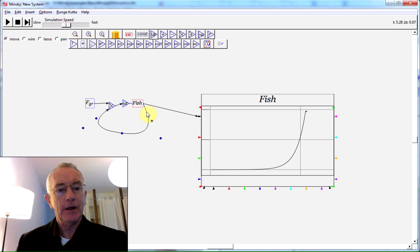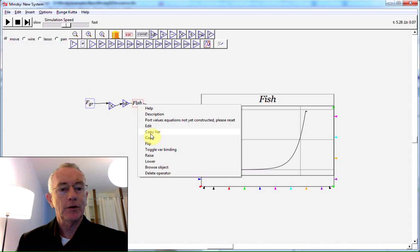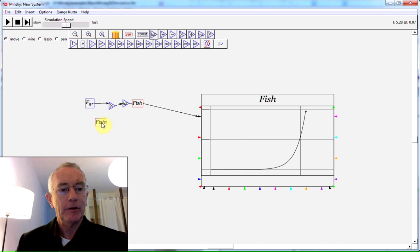If I press the delete key, I can delete that line. By right-clicking here and choosing copy the variable - not the entire integration function but just the variable alone - I've got fish over here, and I can make exactly the same equation.